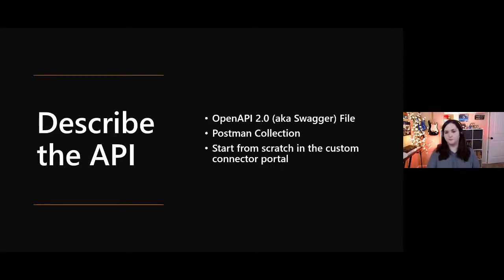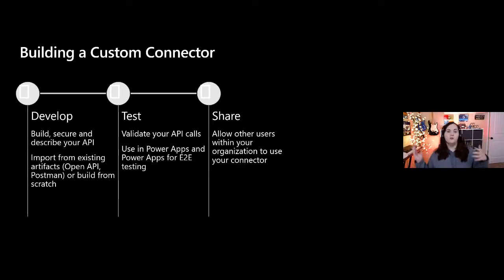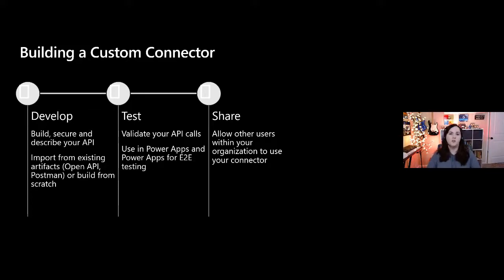When building a custom connector: first you develop, secure, and describe your API. Then import from existing artifacts — OpenAPI, Postman, or build from scratch. Then you'll need to test — Power Platform offers a built-in testing mechanism to test your API while building the custom connector. Then test within your Power App or Power Automate application for end-to-end testing. Finally, share — the connectors have to be shared with anyone you want to allow to consume it. You can share with everyone in your org or just specific users, and you can choose who can use a custom connector you build.